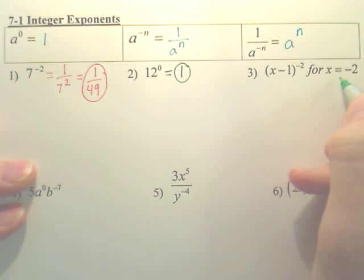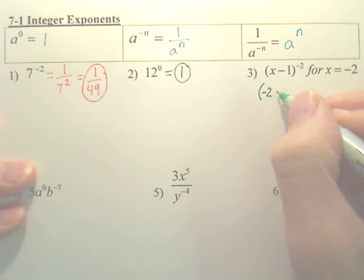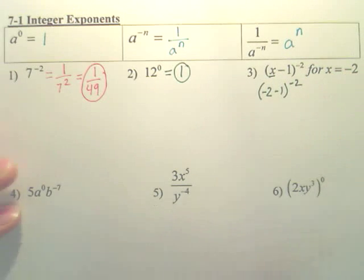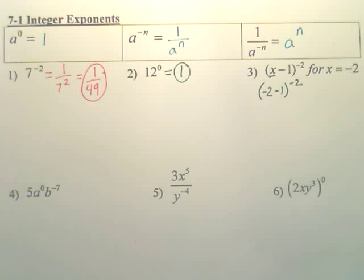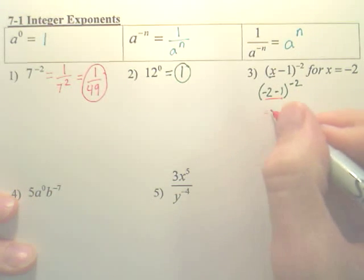Alright, this one. Looks like we're going to plug negative 2 in for x. So let's first do that. Negative 2 in for x, plug this in right here. Now, before we go any further, let's do what's inside of here. That would be negative 2 minus 1. That would be negative 3.